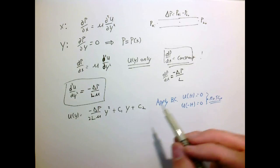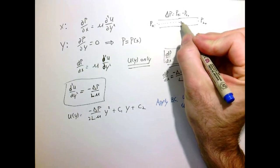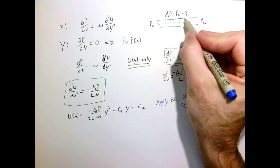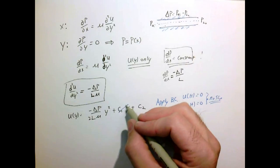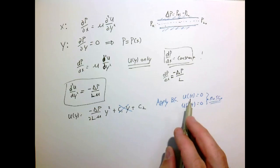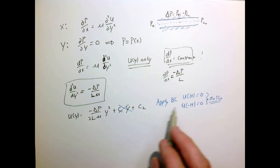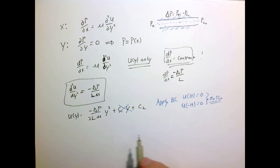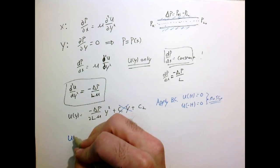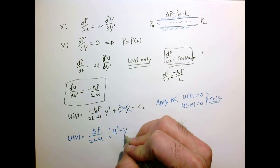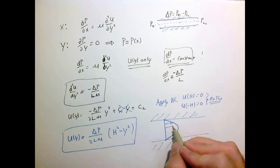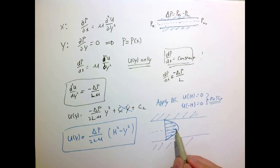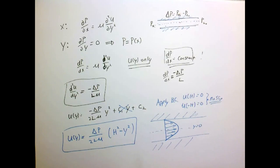We can exploit symmetry rather than solving two equations simultaneously. Since the domain runs from +h to -h, the velocity field must be an even function — symmetric about the centerline — which means C1 equals zero. Applying the boundary condition at y = ±h then gives us C2. The final answer u(y) is a parabolic velocity profile: it is maximum along the centerline at y = 0 with a value of delta p·h² / (2·L·mu), and zero at both walls.